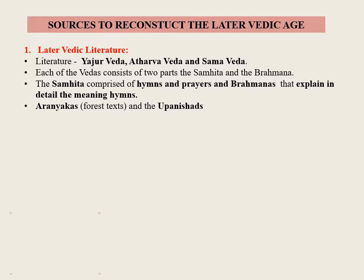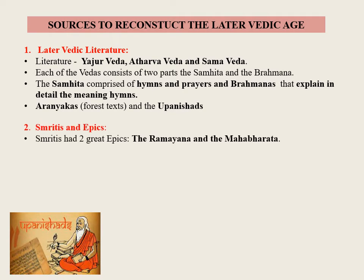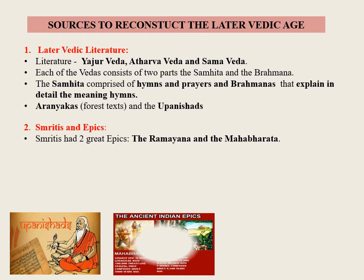Besides, there are Aranyakas — forest texts — and the Upanishads, which contain the philosophical thoughts of learned sages on soul, God, and ultimate truth or reality. Many other literary productions were handed down over centuries, including Smritis and the two great epics, the Ramayana and the Mahabharata.